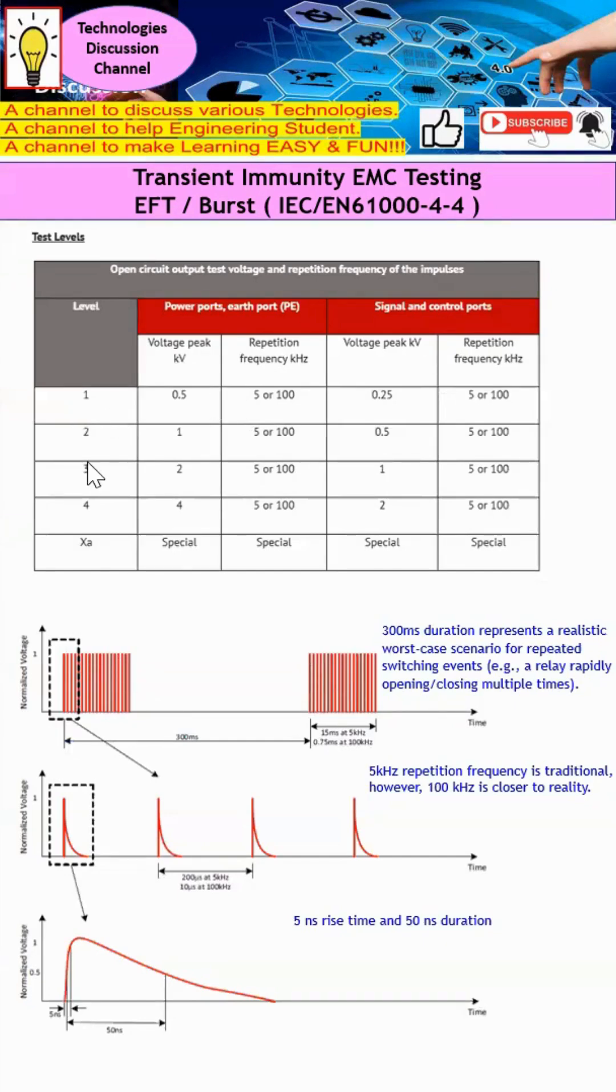Hence, we actually have these five levels of testing. You can see that one, two, three, four, and then this is under the special case. You can see that they actually have various peak voltages from 0.5 all the way to 4. The frequency to test is mainly either 5 kilohertz or 100 kilohertz. 5 kilohertz is mainly more traditional, while most of the real-time applications now actually happen at 100 kilohertz.